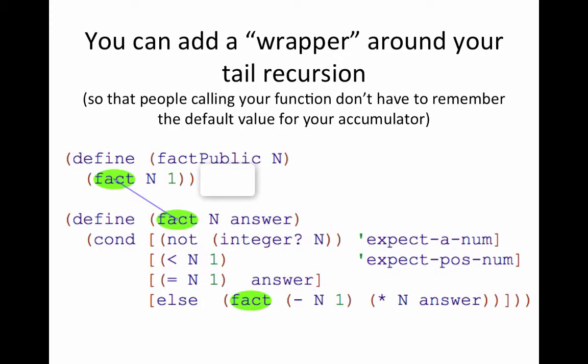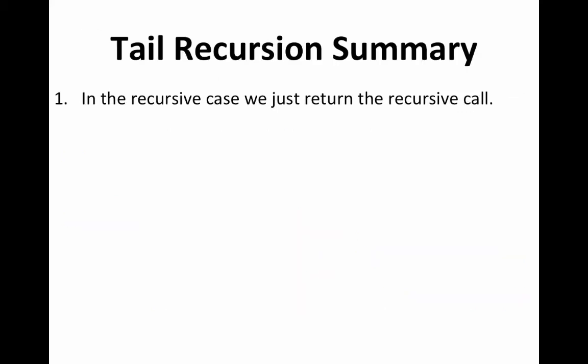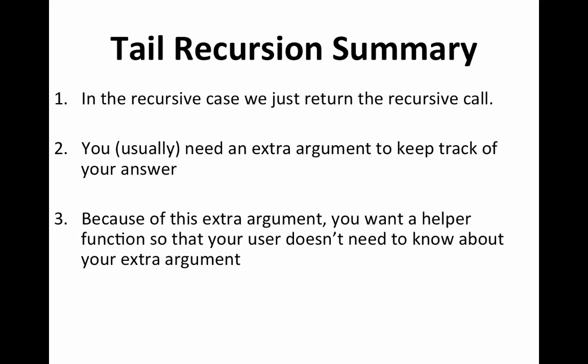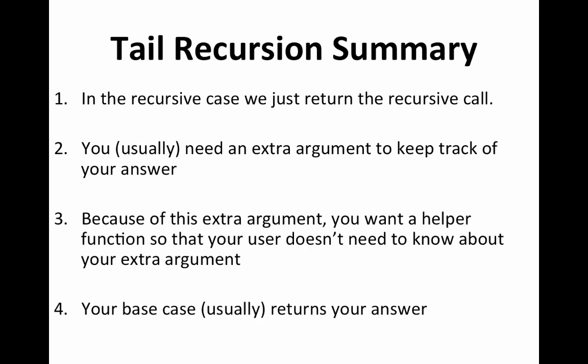That second argument is a little ugly. A really common thing in tail recursion is to write something like a wrapper. Here I have a fact public where someone just passes in one argument, because that's what makes sense for factorial, and then it passes along to fact that takes in two inputs, starting answer at one. In summary: in tail recursion, in the recursive case we just return the recursive call with no other calculations. You usually need an extra argument to keep track of your answer — this is the defining feature. Because of this extra argument, you'll want a wrapper function. You don't want your user to have to know about that extra argument — they could pass in the wrong value. And typically, your base case returns your answer.